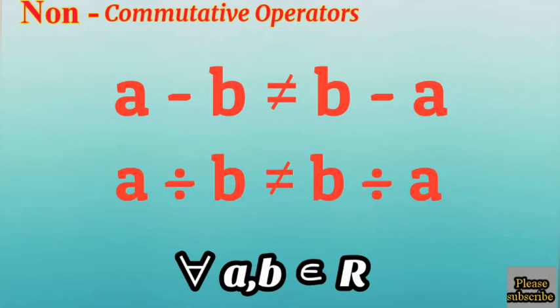The same thing is applicable to division. A divided by B is not the same as B divided by A. This will only be true if A and B are the same, but not true in all cases. Therefore, subtraction and division are not commutative.